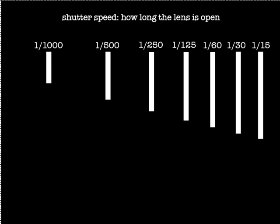Let's start out with shutter speed — that is clearly how long the lens is going to be open. With shutter speeds, it's very obvious that if I go from a 1/250th of a second to a 1/500th, I'm going to be letting in half as much light. If I go from a 250th to a 125th, I'm letting in twice as much light. If I go in one direction it's half as much light; the other direction, it's twice as much light.